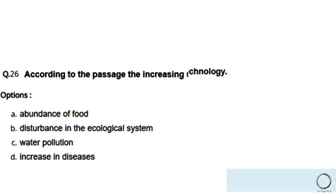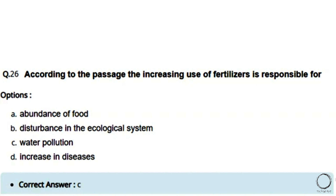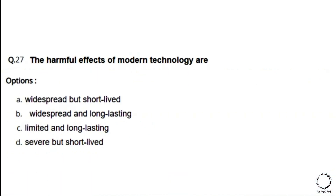Next: According to the passage, the increasing use of fertilizers is responsible for — options: a) abundance of food, b) disturbance in the ecological system, c) water pollution, d) increase in disease. The right answer is option C — water pollution, as mentioned in the passage.